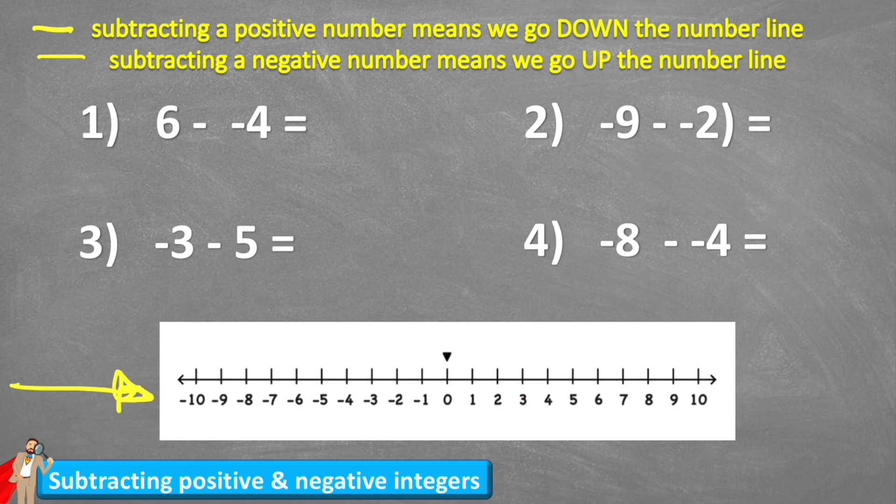So let's have a look at question one. Question one says six subtract negative four. So let's have a look at our number line then. We're starting at six down here and we are subtracting a negative four.